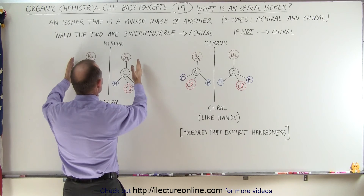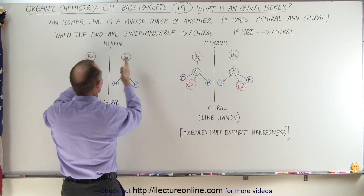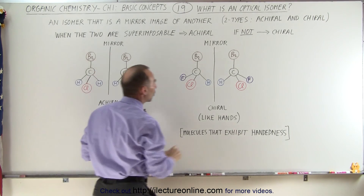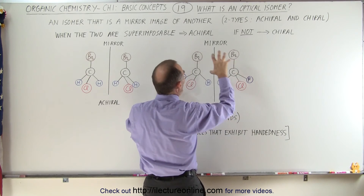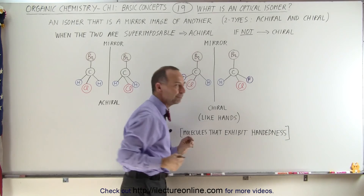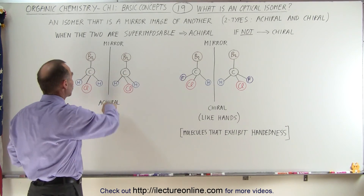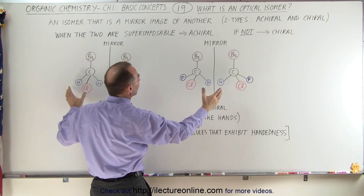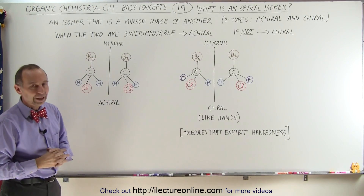So those are the differences. Achiral: when there are mirror images of one another, but they're essentially the same structure — you can superimpose one over the other. Or chiral: when they're mirror images, but you can't take one and superimpose it on the other and make them look the same, no matter how you rotate them. And that's the difference between the two types — achiral and chiral. They're both mirror images, but they are different, and they're both what we call optical isomers.